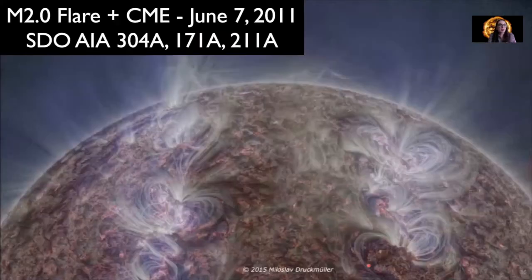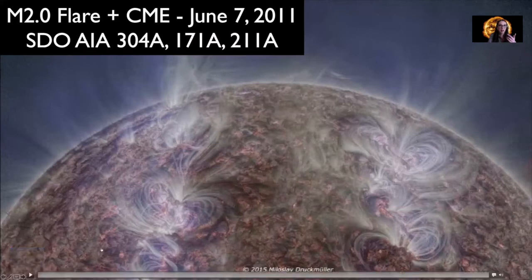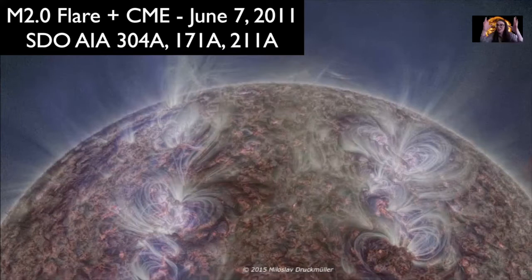Here's an example of a flare. I'm going to play this movie — we'll see an example of a flare and what we call a coronal mass ejection. A coronal mass ejection is an ejection of material from these giant loops of magnetism that are extended up into the corona.